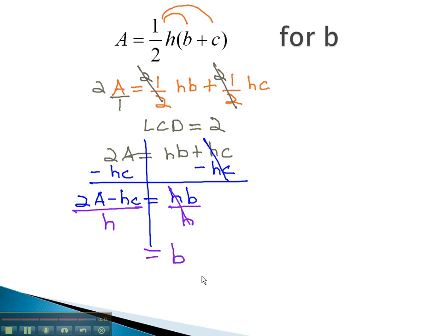Now, the b is alone on the right side, and on the left we have the fraction 2A minus hc over h.